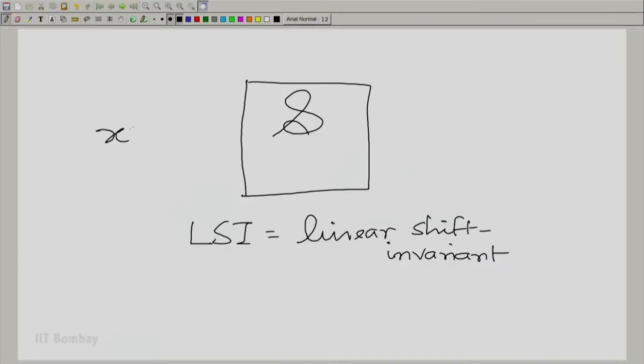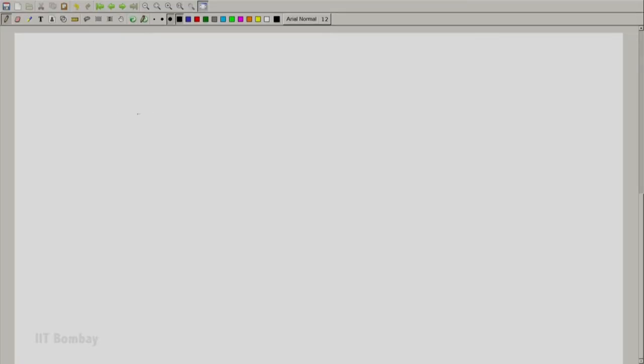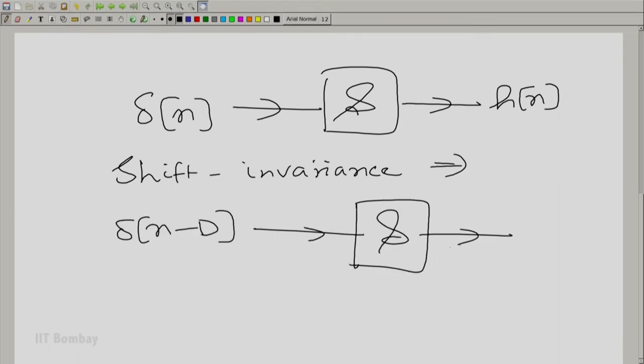We have this x of n being given to the system and you have y of n. In particular we know y of n for x of n equal to delta n, call it h n. Let us first invoke one of the properties turn by turn. Let me invoke shift invariance first. If I know that delta n produces h n, shift invariance tells me delta n minus d produces h of n minus d for every possible d.